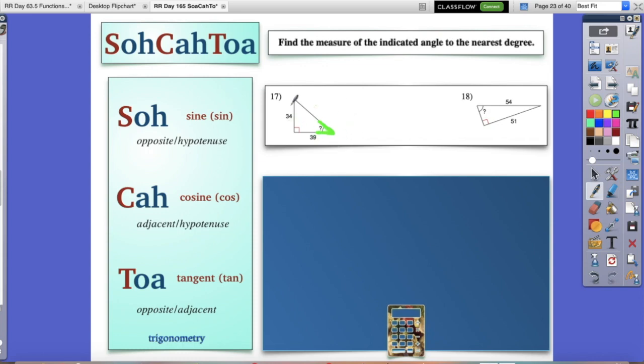Our job is to figure out the measure of this angle. It'll give us two sides. They did not ask us to use sine, cosine, or tangent. We have to decide that on our own.